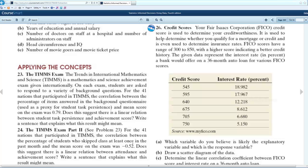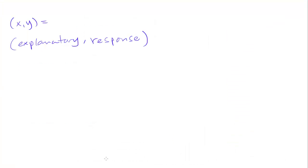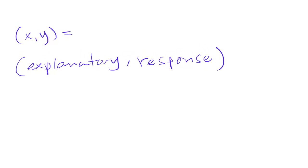In algebra, we talk about X and Y values, but in statistics we have different names for those. In Chapter 4, when we talk about an explanatory variable, what we're talking about is an X value. And when we talk about a response variable, what we're talking about is a Y value.